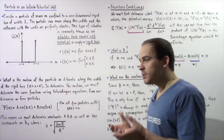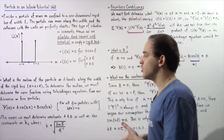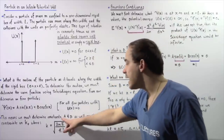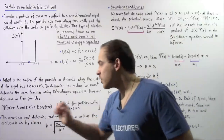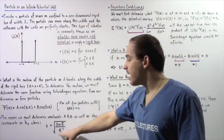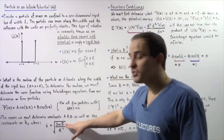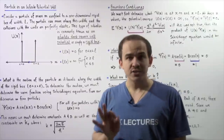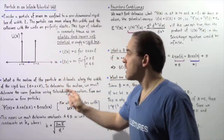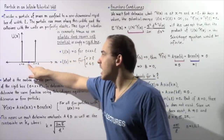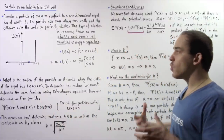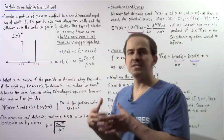To determine the behavior of our free particle inside the one-dimensional rigid box, we use this equation and must find the constants A and B, as well as the constraints on k, where k = √(2mE/ħ²). Since k depends on energy, we also need to find what constraints exist on the energy E. Although the potential energy is zero, the moving particle must have a finite amount of kinetic energy.